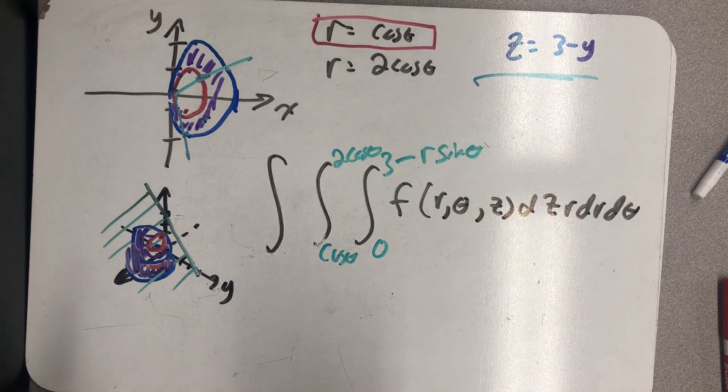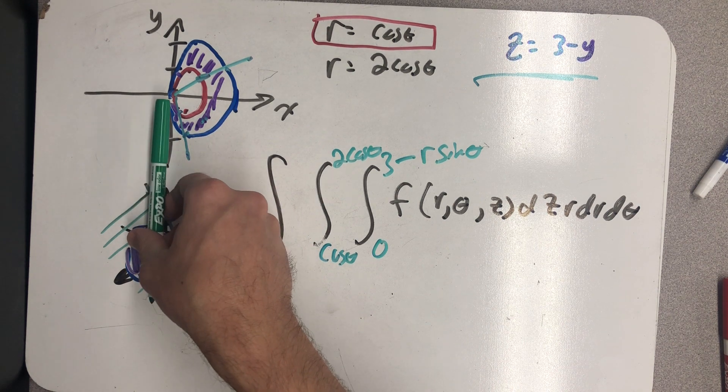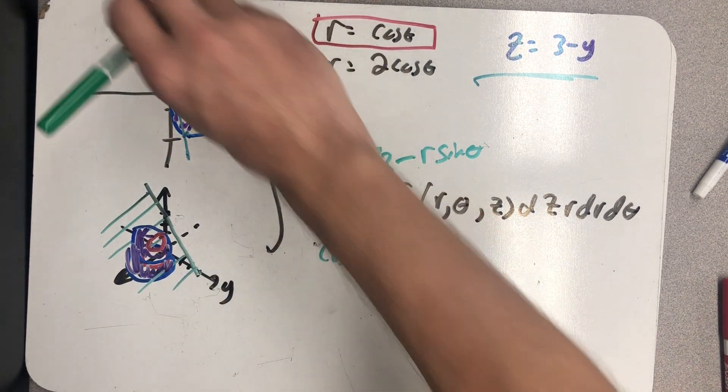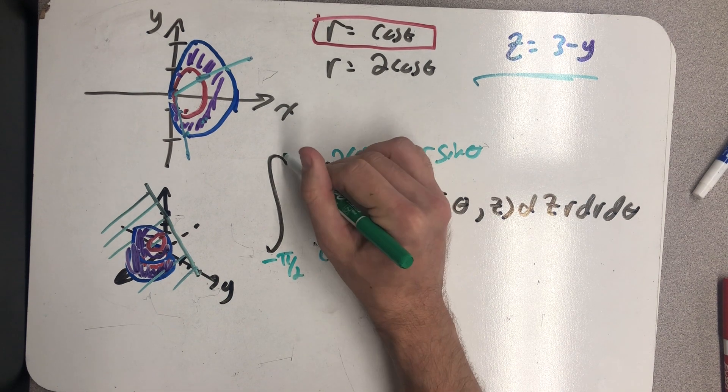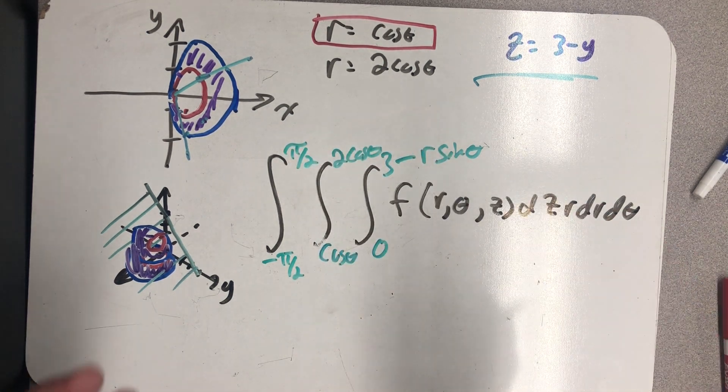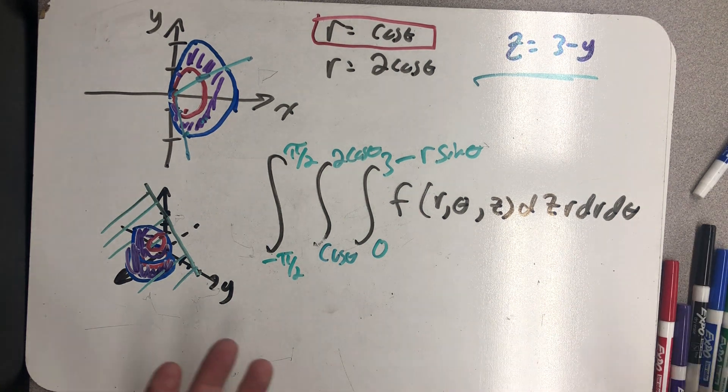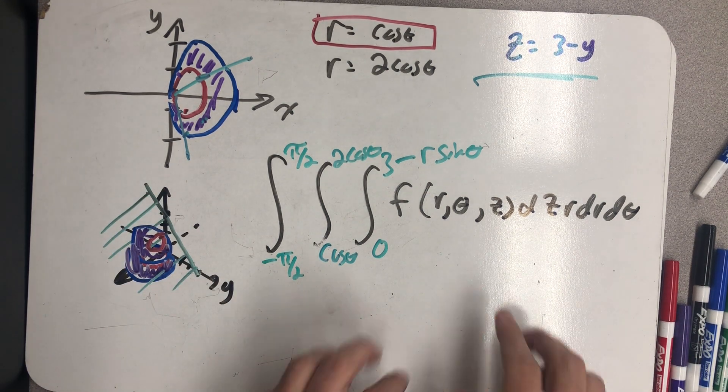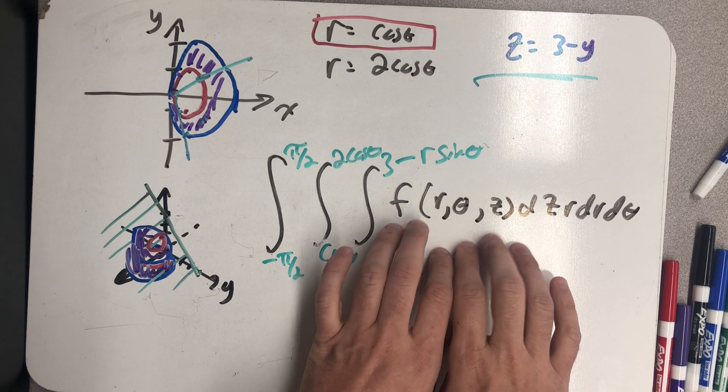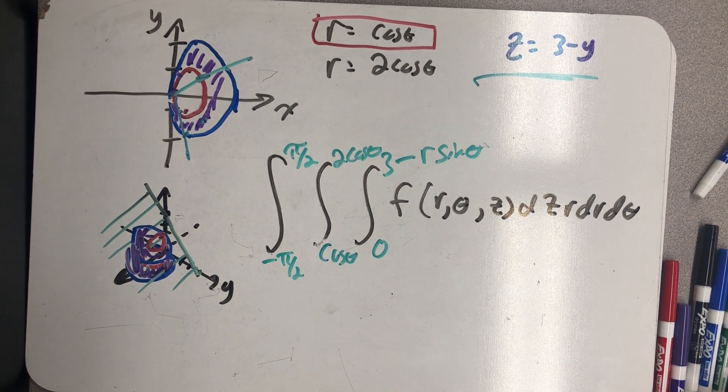Now, finally, I need angles that would draw the whole region, and I'm going to choose minus pi halves all the way up to positive pi halves. And now I've set up an iterated integral that evaluates the triple integral I was asked to evaluate to begin with.